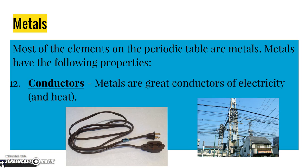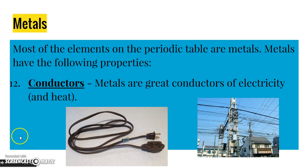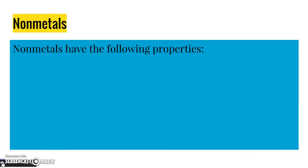Metals are also conductors — they're great conductors of electricity and also heat. That's why we use metals for electrical wires. Like this extension cord: inside this plastic cord is a metal wire. And here is a bunch of electric wires above a street. We use metal for electric wires because they conduct electricity very well.